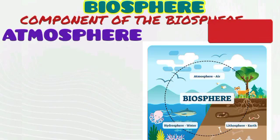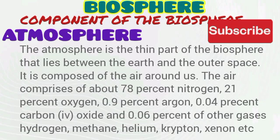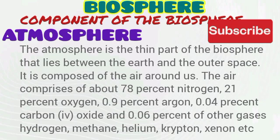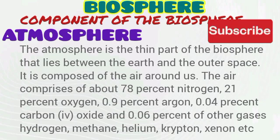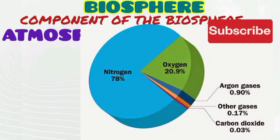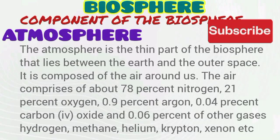Let's talk about the components of the biosphere. Number one: atmosphere. The atmosphere is the part of the biosphere that lies between the earth, the ground, and the outer space. It is composed of the air around us. The air is composed of about 78% nitrogen, 21% oxygen, 0.9% argon, 0.03% carbon dioxide, and other gases.